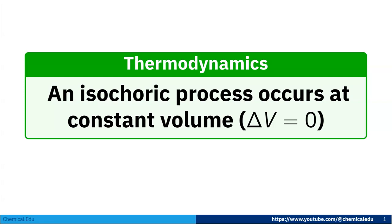Today I'll talk about the isochoric process. An isochoric process occurs at constant volume, meaning delta V is equal to zero.